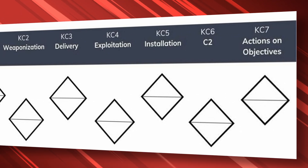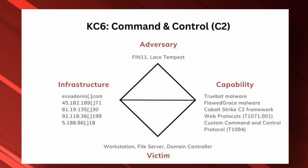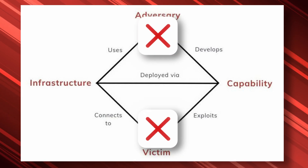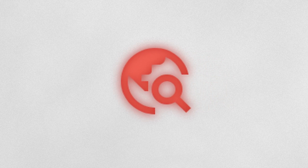For every stage, map each data point or piece of evidence to an adversary, victim, infrastructure, or capability component. Aim to fill each diamond model component with as much data as possible for every stage of the kill chain. At least one component must be populated for each stage between weaponization and command and control to declare your intrusion analysis complete. Any gaps represent an intelligence requirement that must be fulfilled with supplementary data — additional intelligence gathering, malware analysis, reverse engineering, or digital forensics.